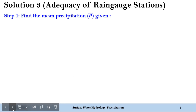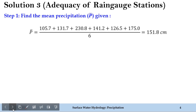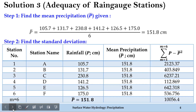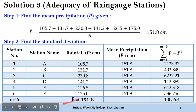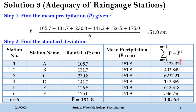The first part of solving this problem is to find out the mean precipitation. It is simply the arithmetic average, and we have obtained it as 151.8 cm. In the second step, let's find out the standard deviation. I have arranged the data in sequence with the corresponding rainfall values received at each station. The average rainfall is 151.8 cm. We now identify the standard deviation using the standard formula, and these are the resulting values.